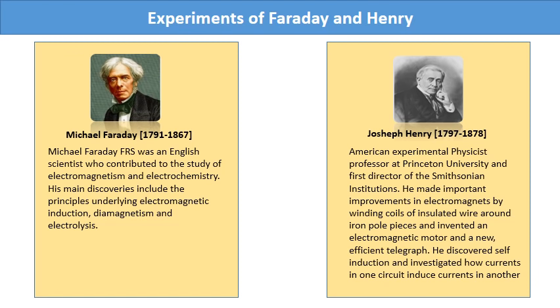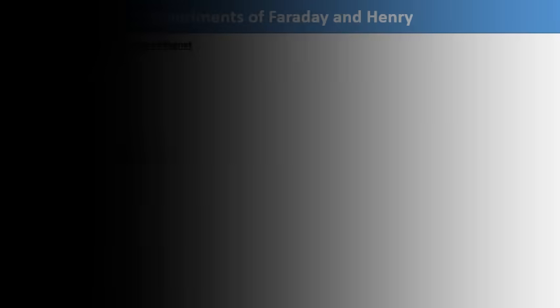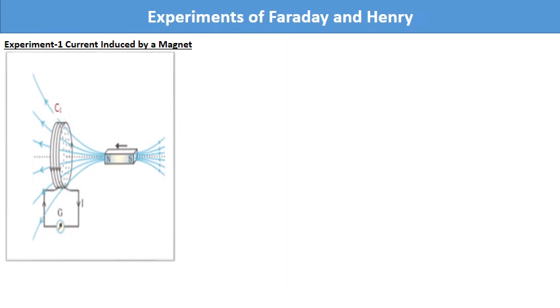The discovery and understanding of electromagnetic induction are based on a long series of experiments carried out by Faraday and Henry. We shall now discuss some of these experiments. Experiment 1: Current induced by a magnet. Figure shows a coil C1 connected to a galvanometer G.